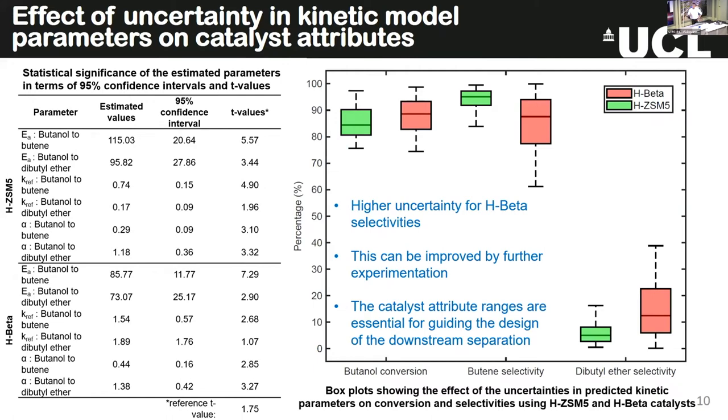The results show the estimated parameters with confidence intervals. You can sample this six-dimensional parameter space and see how different combinations affect the outputs using Monte Carlo simulations, displayed in box plots. We observed higher uncertainties for Hbeta selectivities, which we should be aware of as it affects results in subsequent steps. This can also guide your design of experiments — if you want to improve precision, further experimentation is indicated. The ranges for butanol conversion and selectivities — for example, whether they fall between 80 to 90% or 50 to 90% — affect how you design a robust separation system.